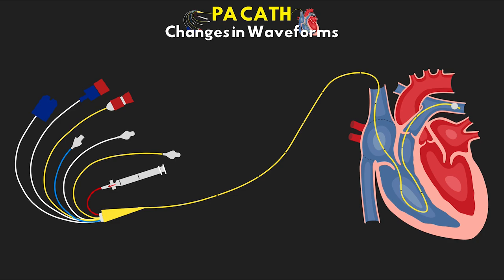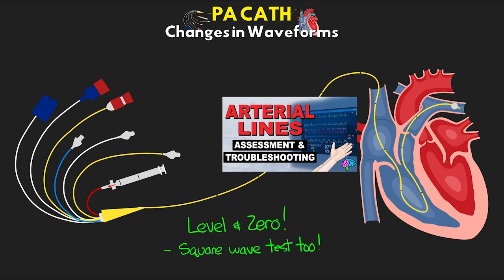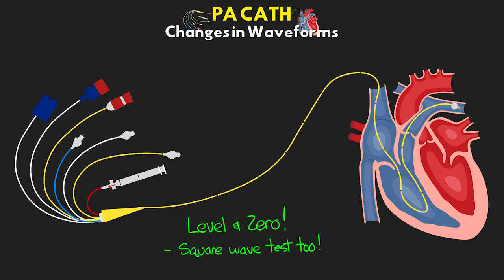Quickly, I want to hit on leveling and zeroing, because you always want to make sure you are leveled and zeroed to know that the numbers and waveforms you're looking at are actually correct. We need to be doing that square wave test to ensure proper dampening. I'm going to link to a lesson where I talked about this more in depth when discussing arterial lines, but it's still very applicable here.